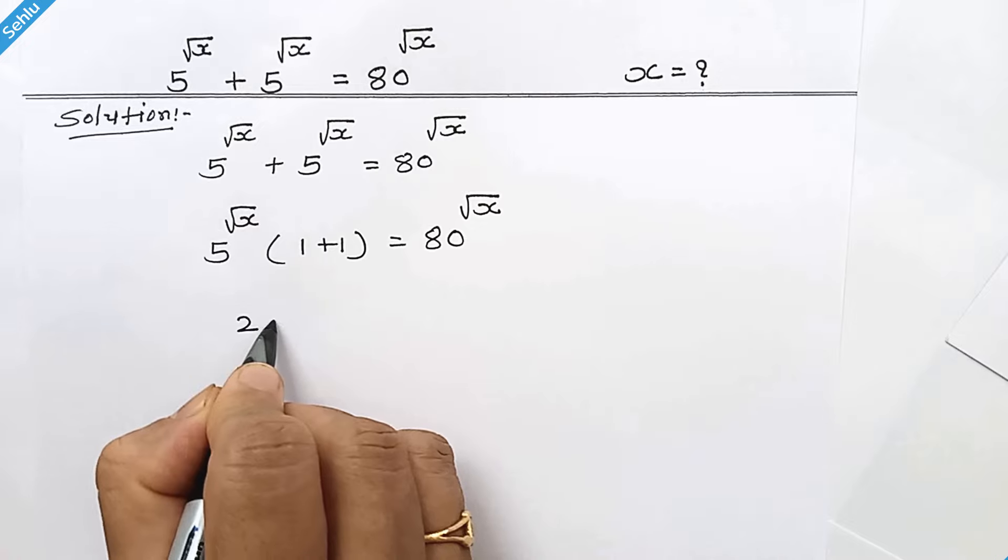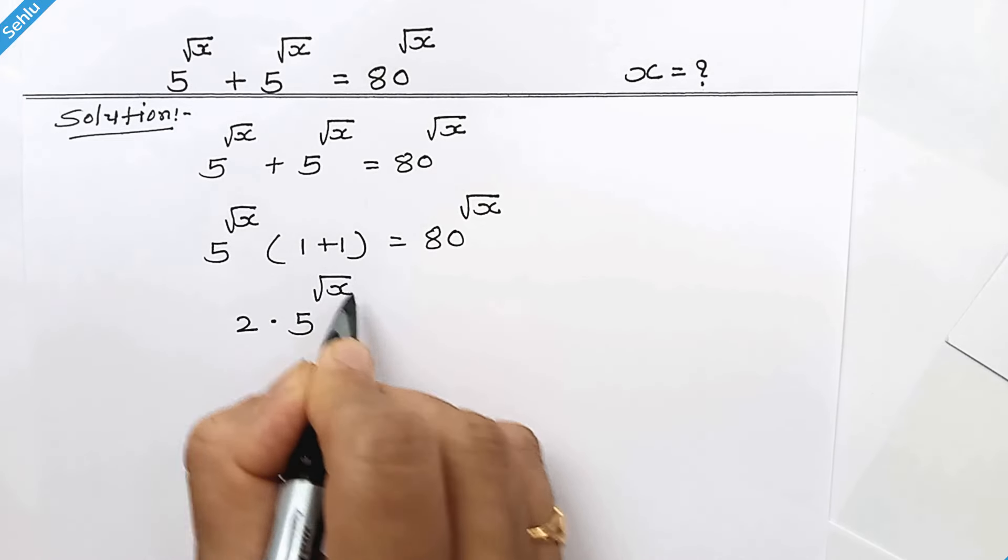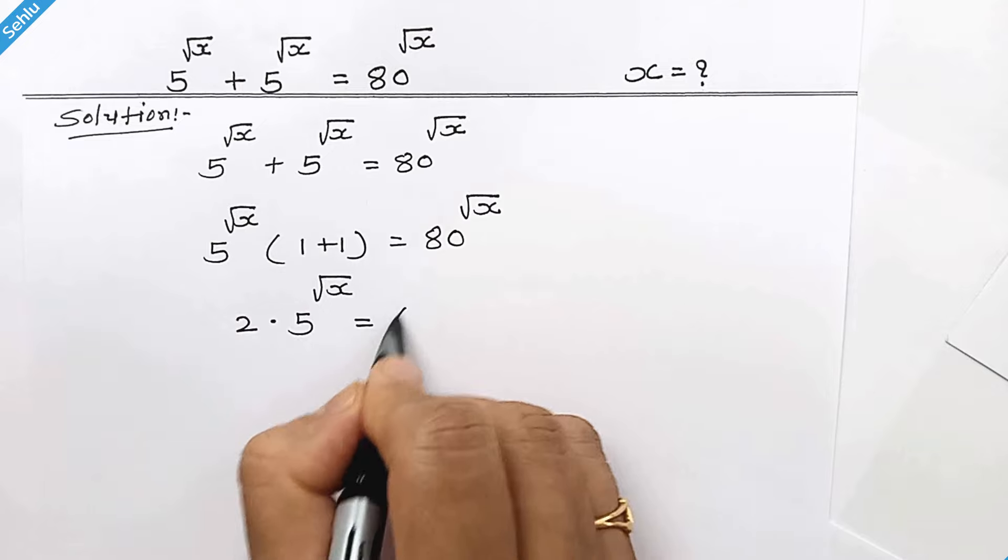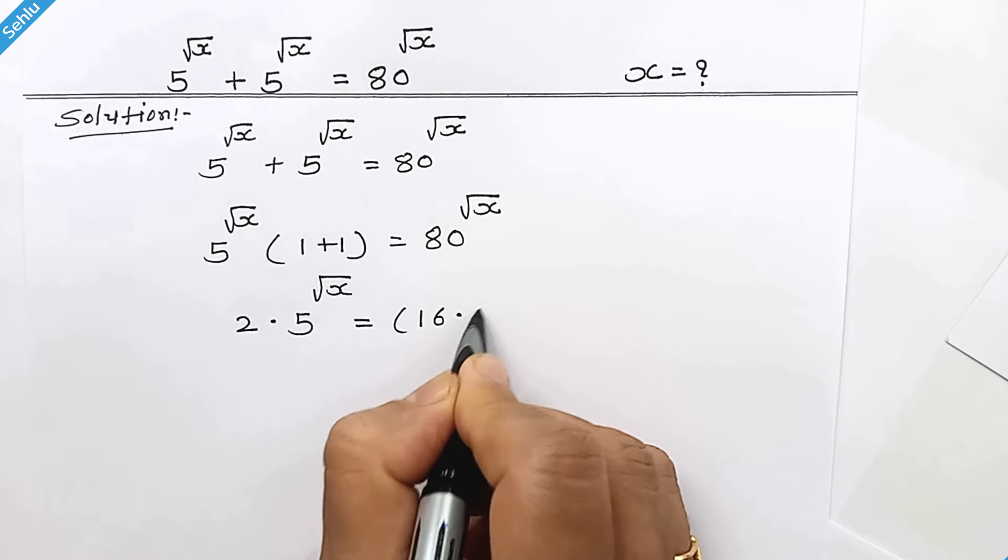So it will be 2 times 5 to the power square root of x is equal to 80, which can be written as 16 times 5.